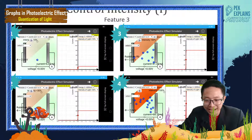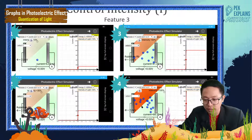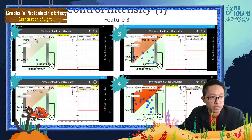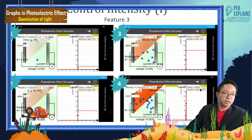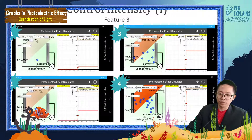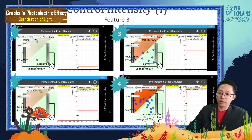If you compare with the high intensity, look at the high intensity — a lot of electrons are ejected. And the saturation current is so high. The current flowing is 68.33. So comparing 10% and 100% intensity, this one is 10 times more current — 6.83 versus 68.33, 10 times more current.